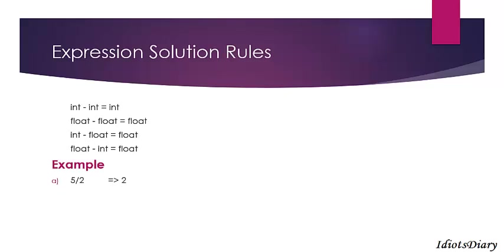Look at the example. We will perform 5 divided by 2. According to mathematics, the output should be 2.5, but in C the output will be 2. Because 5 is an integer and 2 is also an integer, so the output will be an integer and the floating point part will be eliminated.